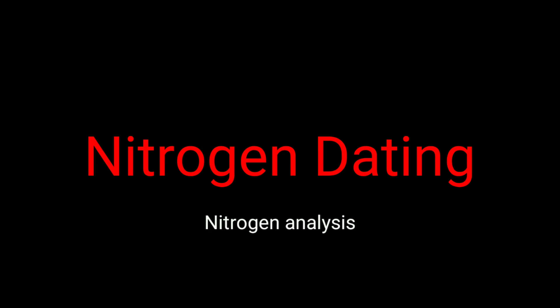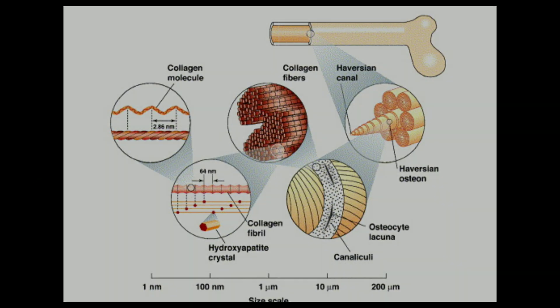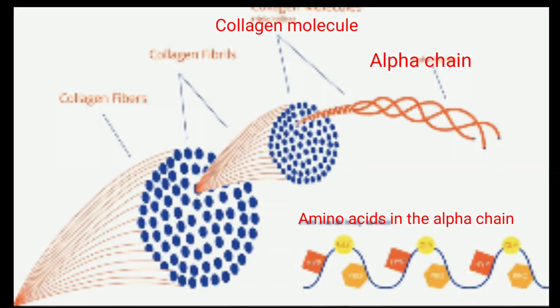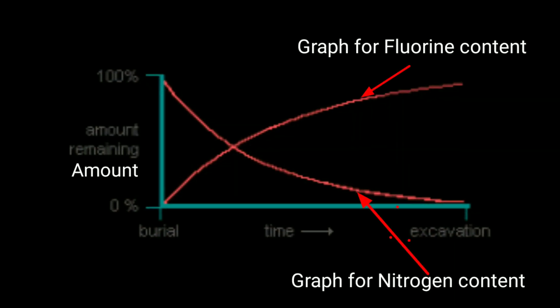Nitrogen dating: nitrogen is a fairly consistent constituent of bone — about four percent — and as bone collagen decomposes, it gradually releases nitrogen at a fairly uniform rate. Nitrogen dating relies on the reliable breakdown and release of amino acids from bone samples to estimate the age of an object. The exact rate of decay depends on the burial environment, but the relative ages of samples from the same environment can be compared by measuring remaining nitrogen content.